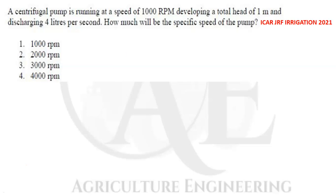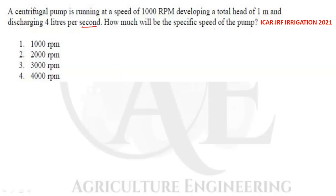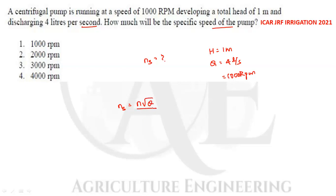The next question: a centrifugal pump runs at 1000 rpm, develops a total head of 1 meter, and discharges 4 liters per second. Find the specific speed. The formula for specific speed is Ns = N√Q / H^(3/4), where N is speed in rpm, Q is discharge, and H is the total head.